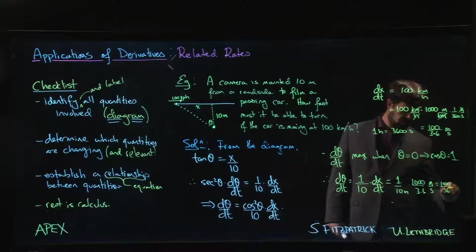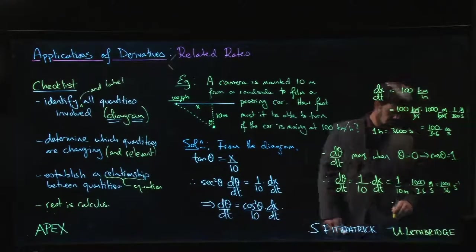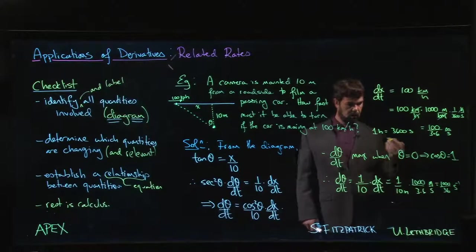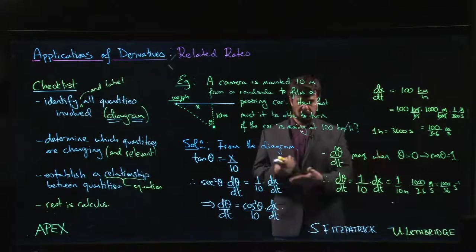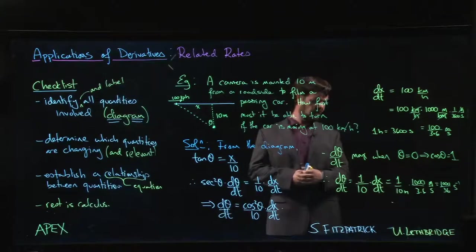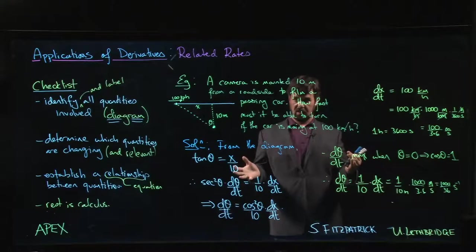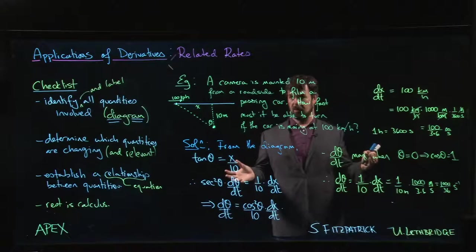Seconds to the minus 1, or radians per second, gives us our rate. We can punch that into the calculator and work out the decimal. That's going to give us the rate at which the camera needs to be able to turn.